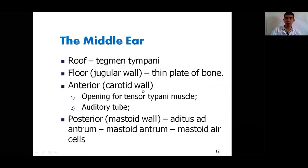The auditory tube, also known as the pharyngotympanic tube or Eustachian tube, is a canal that connects the middle ear with the nasopharynx. Its function is to equalize the pressure on both sides of the tympanic membrane. The posterior mastoid wall has an irregular aditus ad antrum — an opening that relates the posterior wall of the tympanic cavity with the mastoid antrum and mastoid air cells.